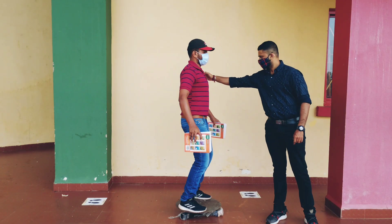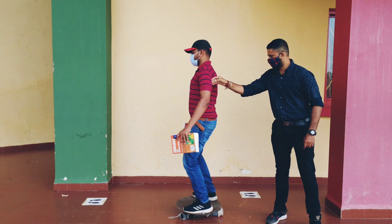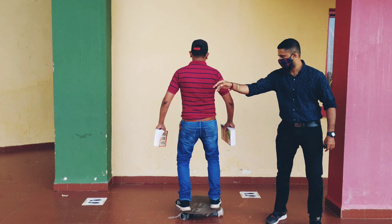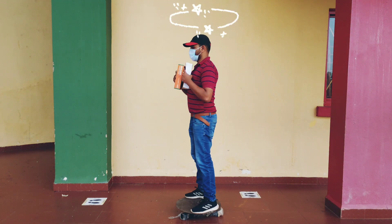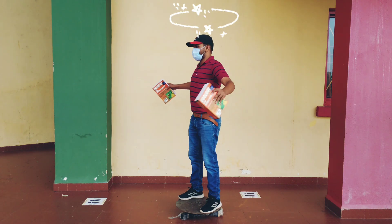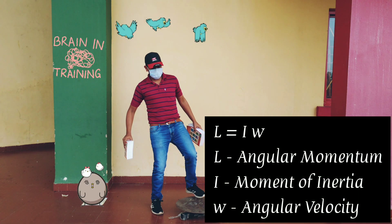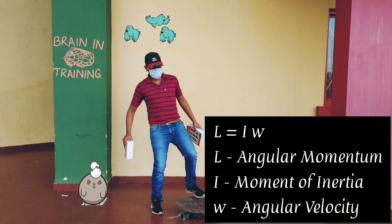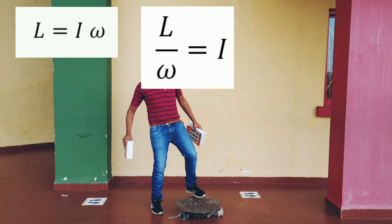When the masses are away from the axis of rotation, the rotational velocity decreases, and when the masses are closer to the axis of rotation, the rotational velocity increases. From the equation of conservation law of angular momentum, L equals I omega, we can clearly see that moment of inertia, I, is inversely proportional to angular velocity.